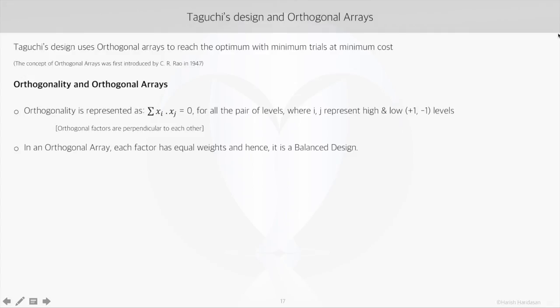Now coming to an array, it would be called orthogonal when it is balanced by considering all levels of all the factors equally distributed in the array. So we can say that the orthogonal arrays are balanced designs that belong to the family of highly fractional factorial designs.